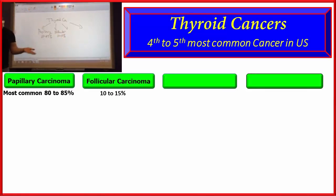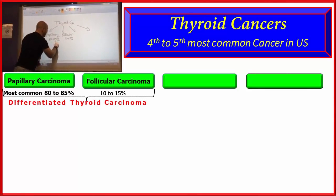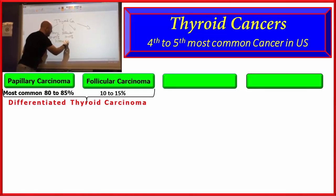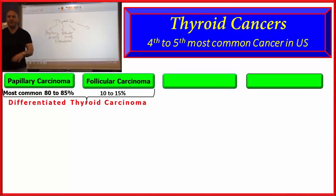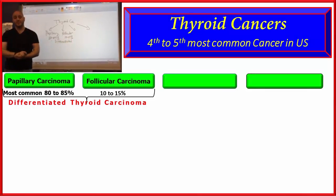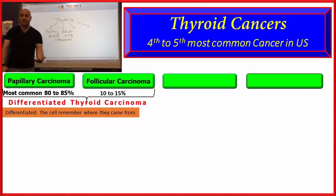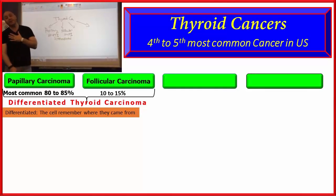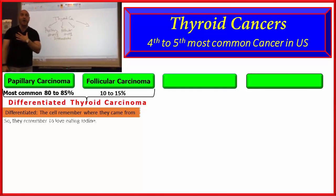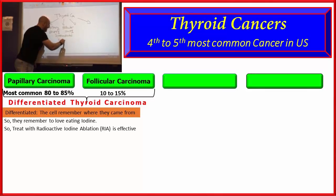Now this is very important because these two cancers are what are called the differentiated carcinomas — the differentiated thyroid carcinomas. Why does that matter? It's extremely important because differentiated means the cells remember where they came from. So if you have a well-differentiated colon cancer, the cells look like colonic epithelium. In this case, these cells look and remember: 'I'm a thyroid cell, and if I'm a thyroid cell, I love to eat iodine.' These are the guys that we can treat with radioactive iodine ablation.